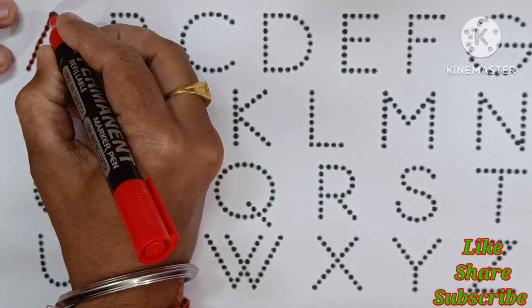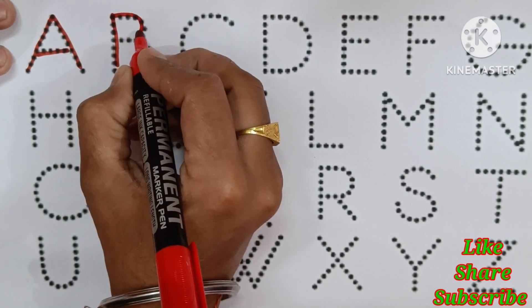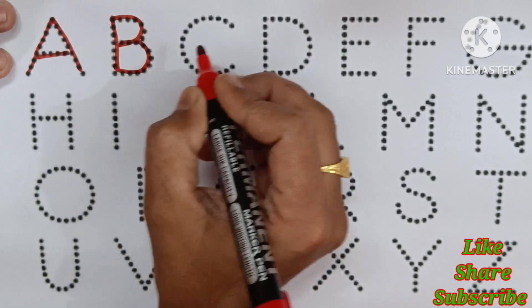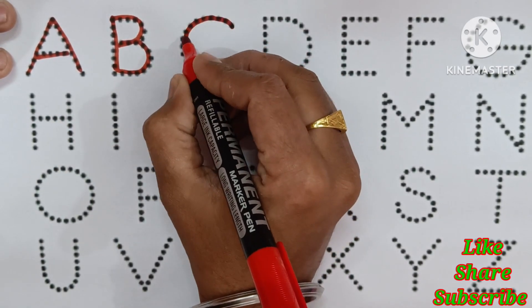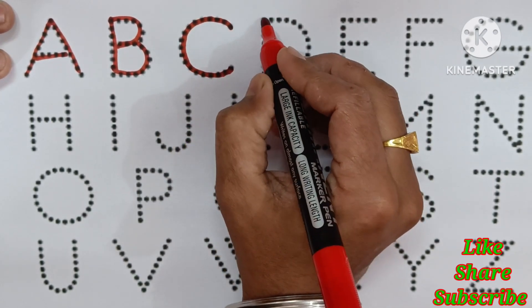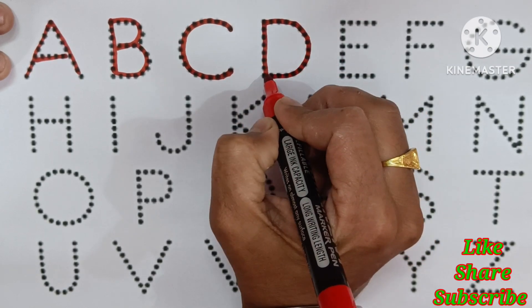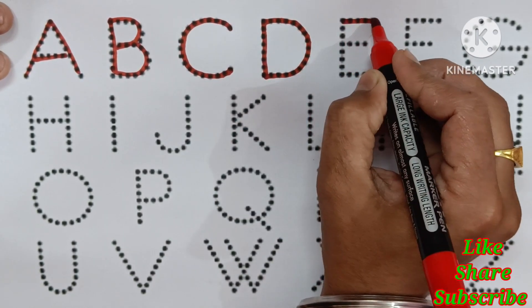A for apple, B for ball, B for ball, C for cow, D for dog, D for dog, E for elephant.